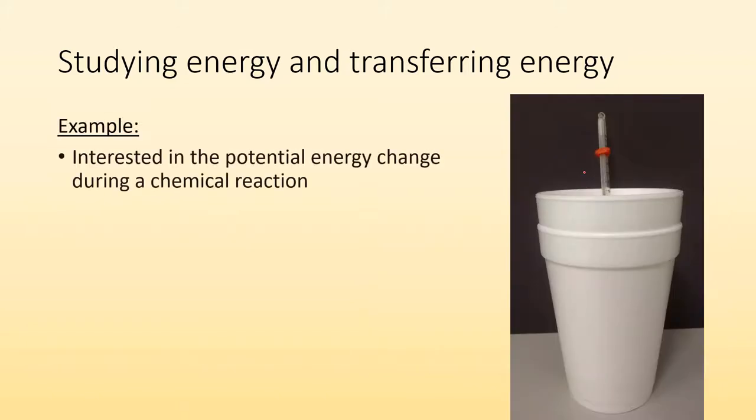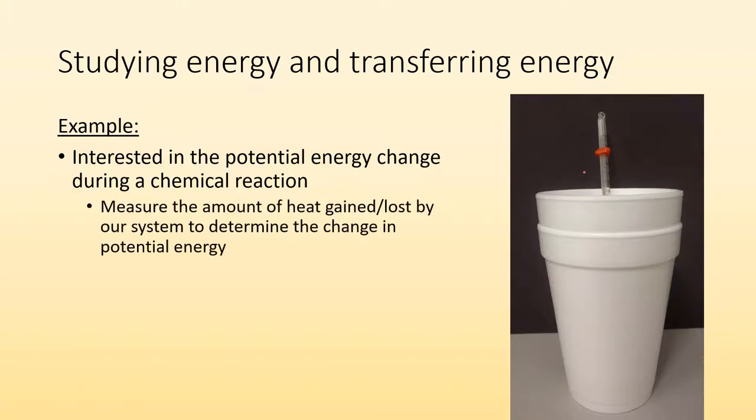So an example is, let's say we're interested in the potential energy change during a chemical reaction. You mix two chemicals, they heat up or they cool off. You're interested in that. Well, then you would want to measure the amount of heat gained or lost by your system to determine the change in potential energy. So the system could be the chemicals reacting. And then our surroundings would be everything else. It would be the water that they're reacting in. You could look to see what's happening to your surroundings so you know what's happening to your system. If your surroundings all of a sudden has more energy, then you know that your system must have lost energy.